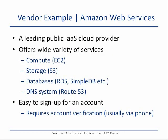Amazon Web Services is one of the leading providers of IaaS cloud. It offers several services; key ones include compute — offered as EC2 (Elastic Compute Cloud) — storage via Simple Storage Service (S3), database services including Relational Database Service and SimpleDB, and a DNS system. Before accessing any of these services, Amazon requires you to sign up for an account where your identity is typically verified, often by a phone callback when you register.